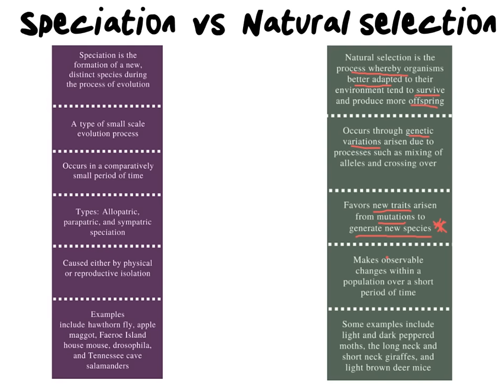Natural selection does make some observable changes within a population over a fairly short period of time — it doesn't have to take millions of years. Natural selection can actually take up to two to seven generations before you can see it, and there are many examples that humans have actually observed. Some examples we have observed would be the light and dark peppered moths, found in Europe, which went from black to white and then back to black simply because their environment changed due to human activity. The peppered moths did not become a different species; they just alternated between which was the favorable trait — at one time it was more favorable to be a lighter color, and at another time it was more favorable to be a darker, blacker color.